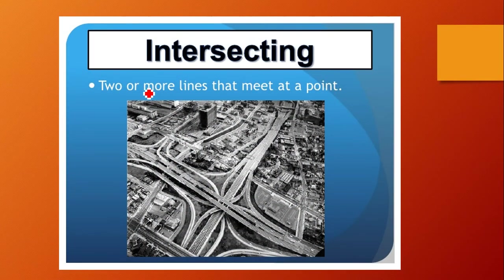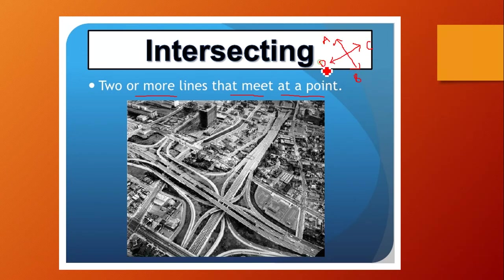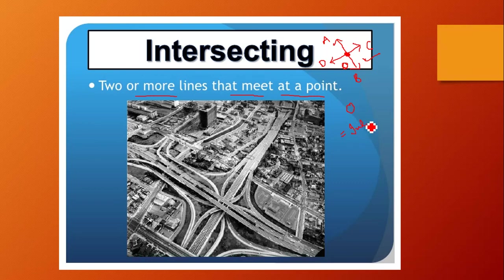Intersecting lines are two or more lines that meet at a point. Here we have two lines AB and CD — as you can see in the figure they meet at a point, which we call the point of intersection. If I name it O, then O is the intersecting point where lines AB and CD cut at a fixed point.